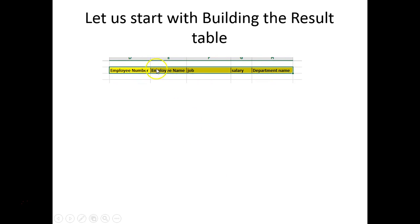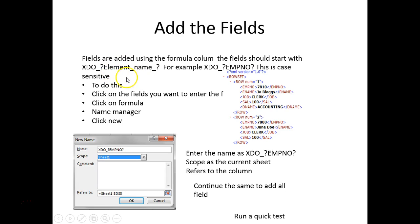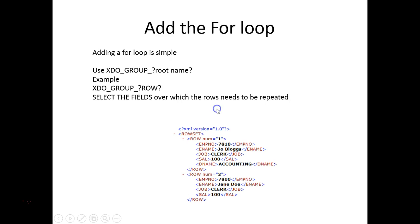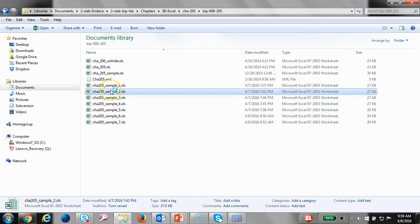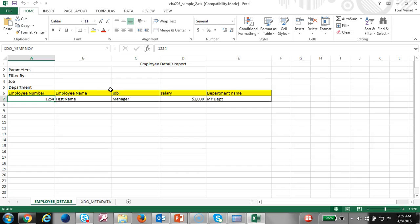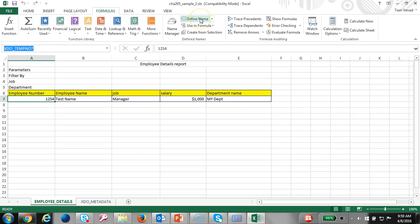Let's go ahead and build the basic layout. In order to add the fields we use XDO EMP number. We have done this in the previous lab, so we can skip through this quickly. We use this method to create the XDO EMP fields. We've created the formatting, then added the fields using Formulas > Define Name — we can use the name manager to add them.